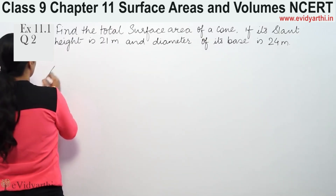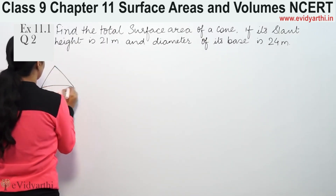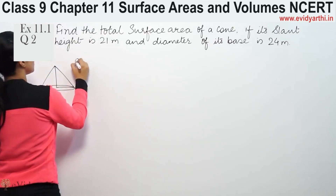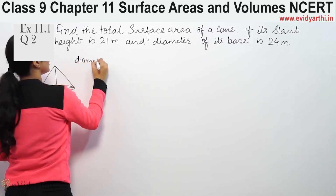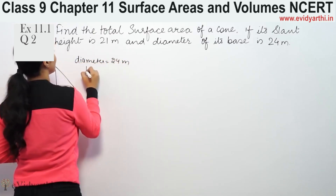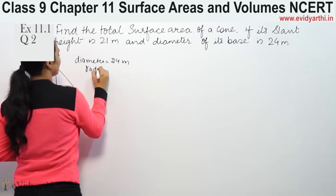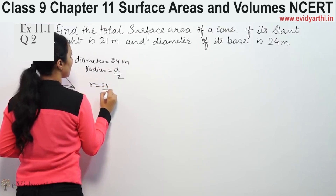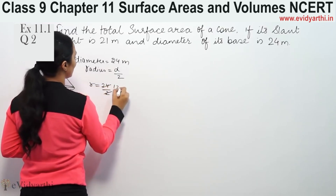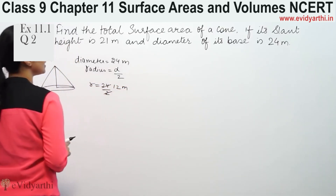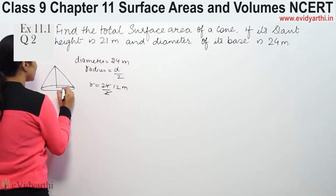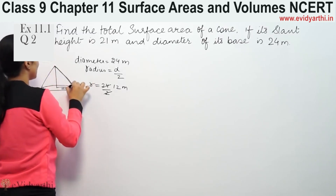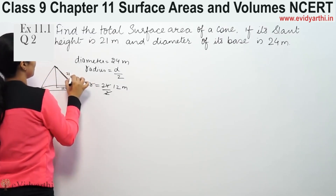So we have a cone and we need to find the total surface area. The diameter given is 24 meters. So radius is diameter divided by 2, which means radius is 24 by 2 equals 12 meters. So we have radius equal to 12 meters, and the slant height is 21 meters.